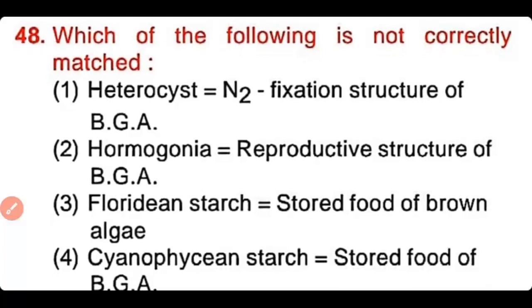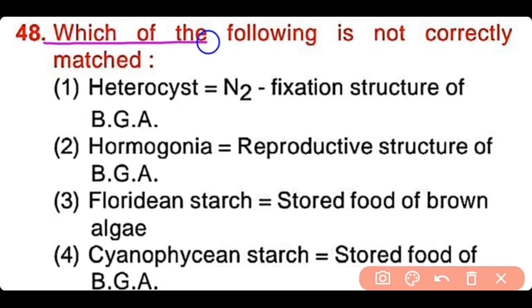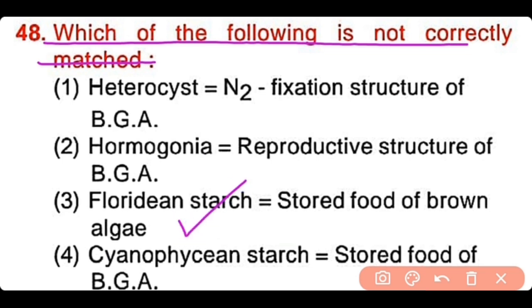Question number 48: Which of the following is not correctly matched? Heterocytes help in nitrogen-fixing in blue-green algae; hormogonia are reproductive structures of blue-green algae; floridean starch is stored food of brown algae; or cyanophycean starch is stored food of blue-green algae? The correct answer is option 3. Floridean starch is not the stored food of brown algae; rather, it is the stored food of red algae.